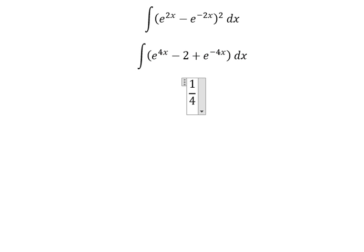1 over 4 e to the power of 4x, minus 2x, and we have negative 1 over 4 e